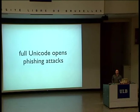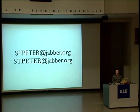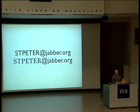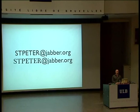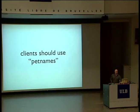We have full Unicode, but it's good and it's bad. Because now you can have some nice phishing attacks. For instance, my address is st.peter@jabber — does Aunt Tilly really know that the address at the bottom uses Cherokee characters instead of ASCII characters? Probably not. So she says, oh, this looks like my friend st.peter@jabber.org, but it ain't — it's someone else. So clients should use pet names to try to get around some of the possible phishing attacks. We haven't seen these happen, but we need to be prepared.